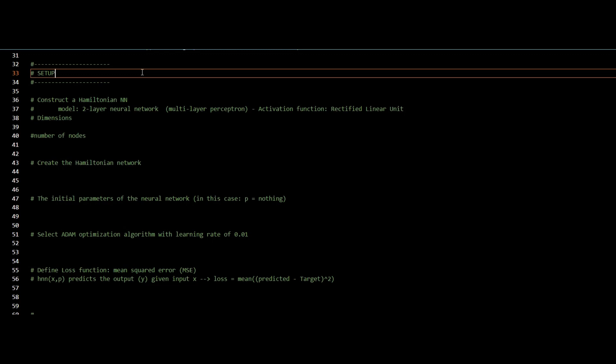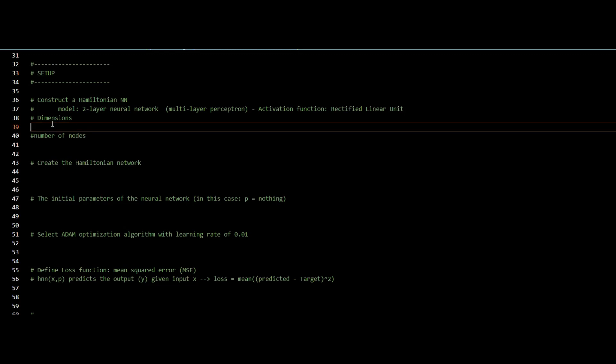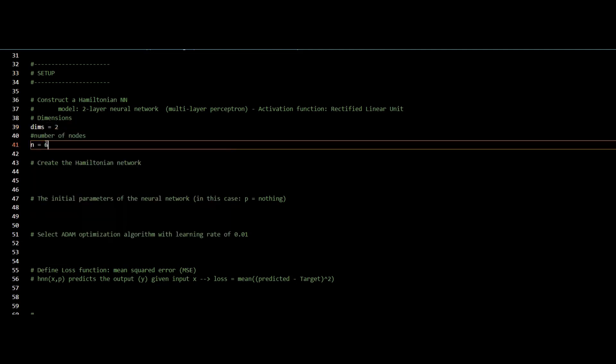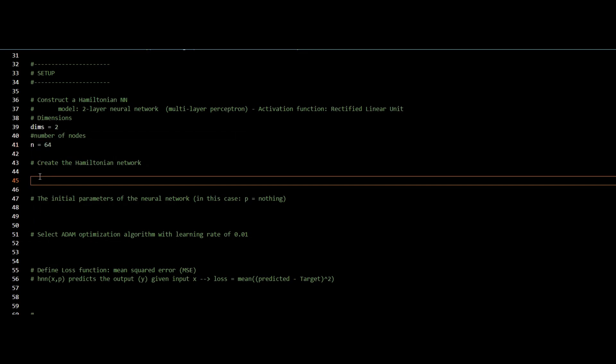The second step is the setup. I will create my Hamiltonian neural network, which will be a two-dimensional network, having 64 nodes in each internal layer. To create my Hamiltonian network, I will use the HamiltonianNN function in Julia.